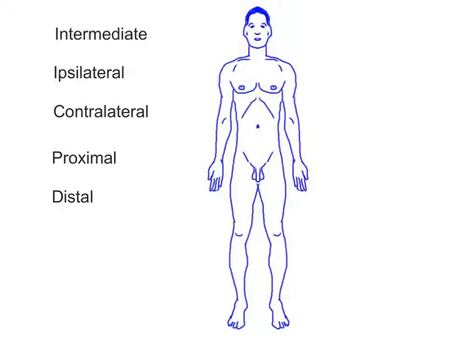Proximal is used to describe a structure that is closer to the point of attachment of a limb to the trunk, or closer to where a structure originates. Think of proximal as being approximate or closer to the point of attachment. The brachial region of the upper arm is proximal to the carpal region at the wrist. Distal describes a structure that is farther from the attachment of a limb to the trunk or farther from where a structure originates. Think of distal as being distant or further away from the point of attachment. The great toe, or big toe, digit 1, is distal to the femoral region of the thigh.